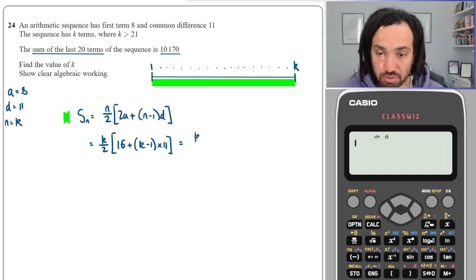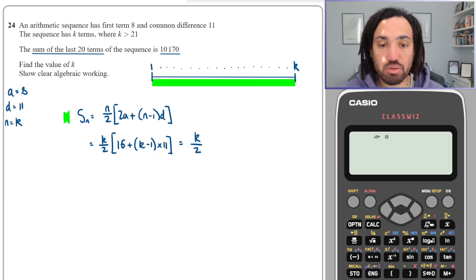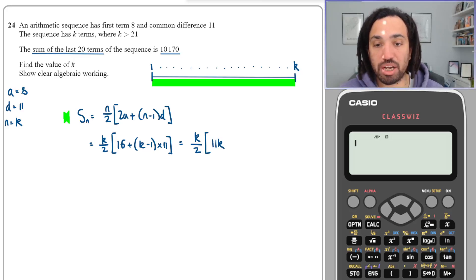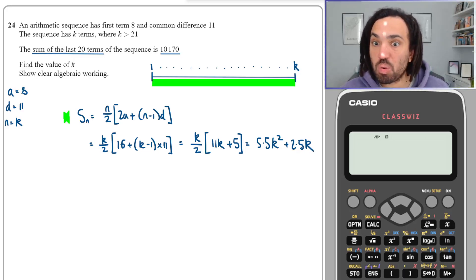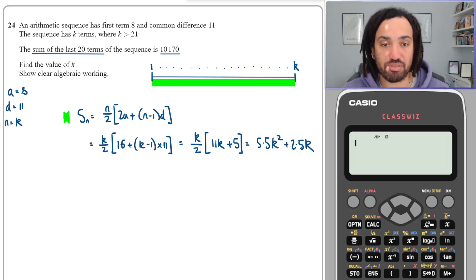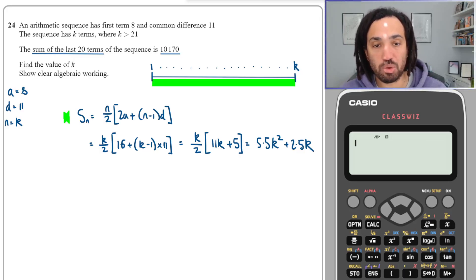Okay, great. So we can simplify that and I can write that as k over 2. Let's multiply out this mini bracket: I'm going to get 11k, minus 11, and we've got the plus 16 there, so that makes plus 5. So that's equal to 5.5k squared plus 2.5k. Okay, so that's all of the terms up until the kth term, but that's not what we want, is it?